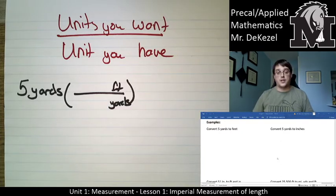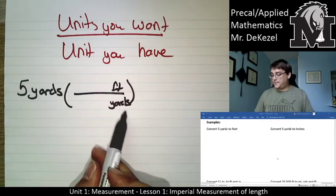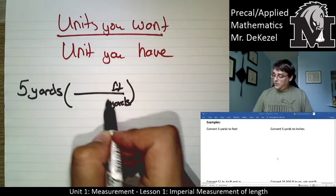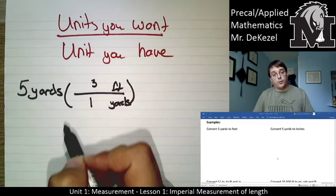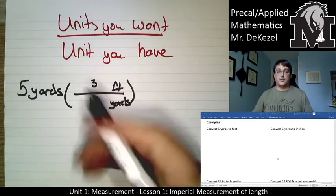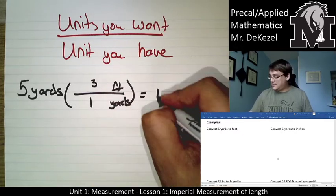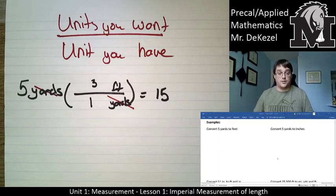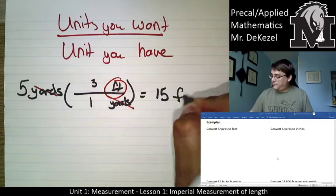The reason we do this is because if you have something on top and something on the bottom, they cancel out and are completely gone. We know there are three feet in one yard — this is a version of one, just changing to a different unit. So five times three divided by one gets us 15, and because yards cancels out, we are left with just feet. So we have 15 feet.